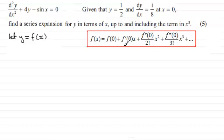And for the first term here, f(0), we've already got that. When x = 0, we know that y or f(0) would equal 1/2. So that's our first term, 1/2.